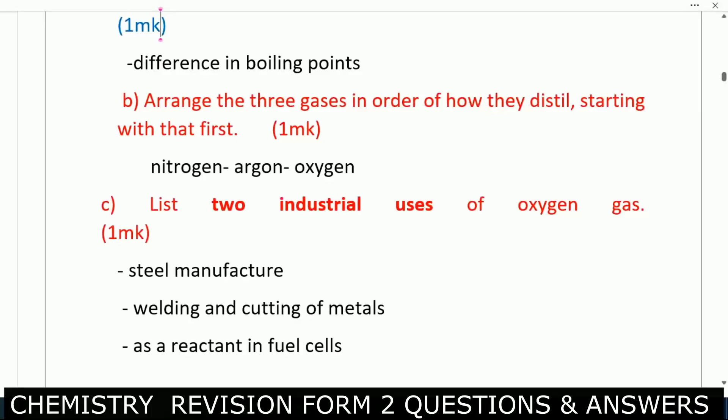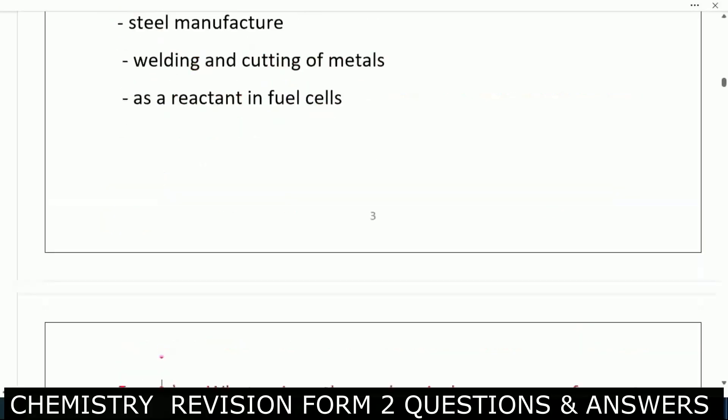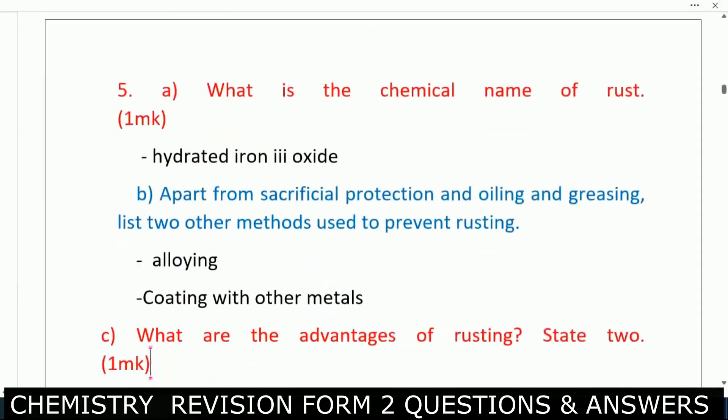List two industrial uses of oxygen gas — this one they repeated even in KCSE. Number one: in the manufacture of steel. Number two: welding and cutting of metals. Also, as a reactant in fuel cells.